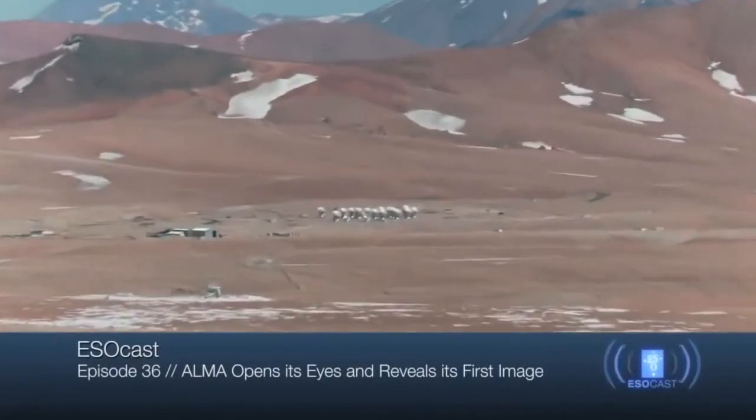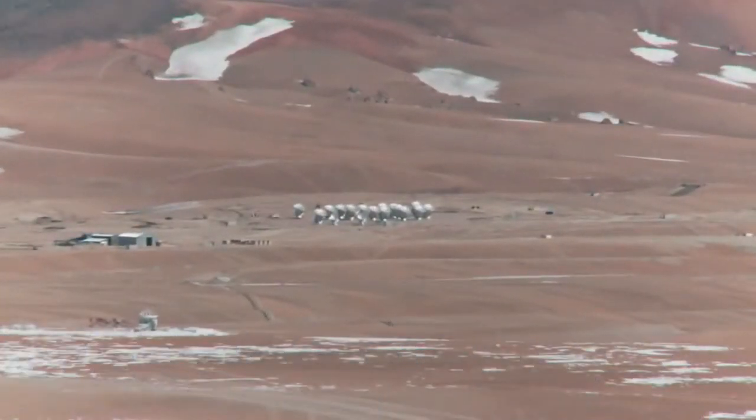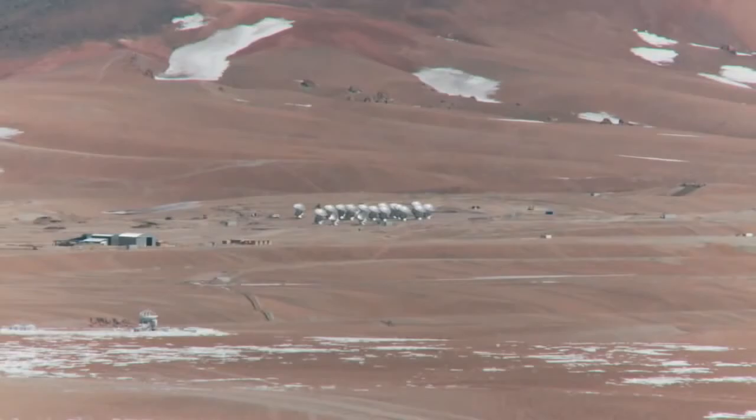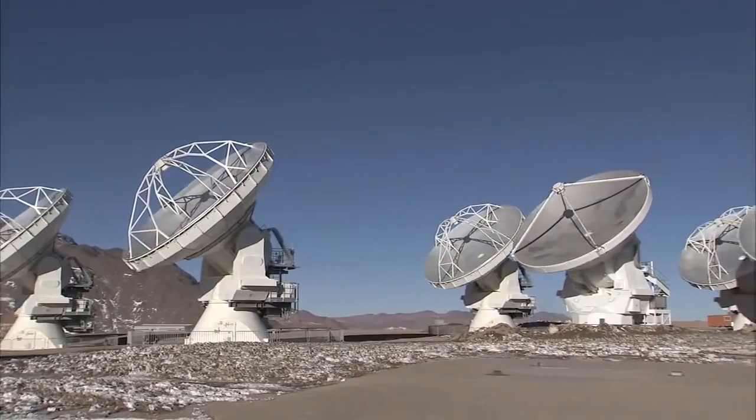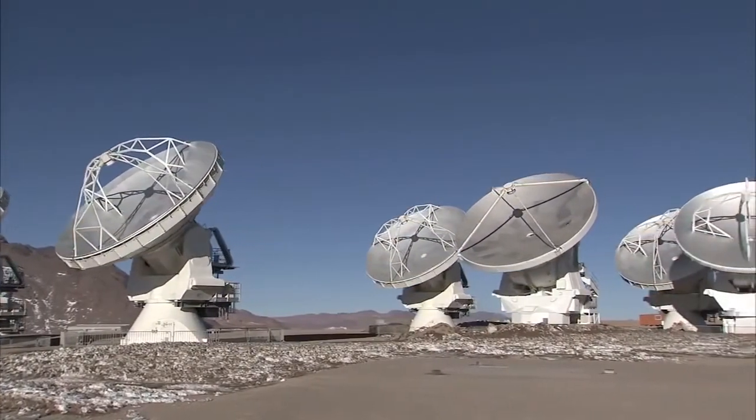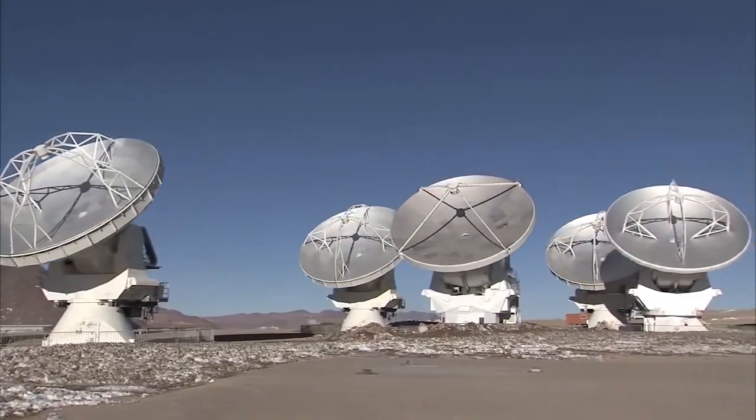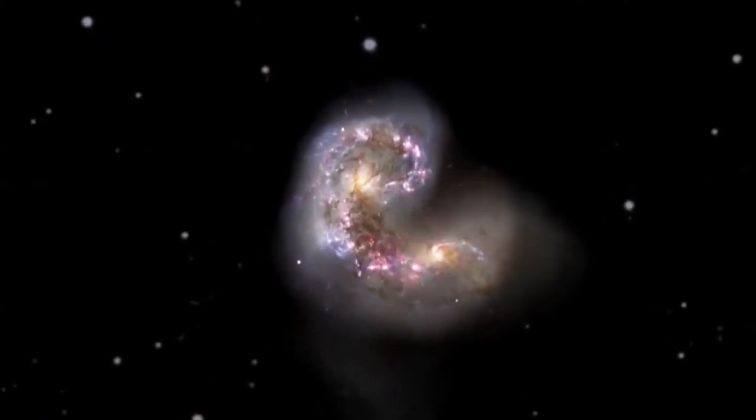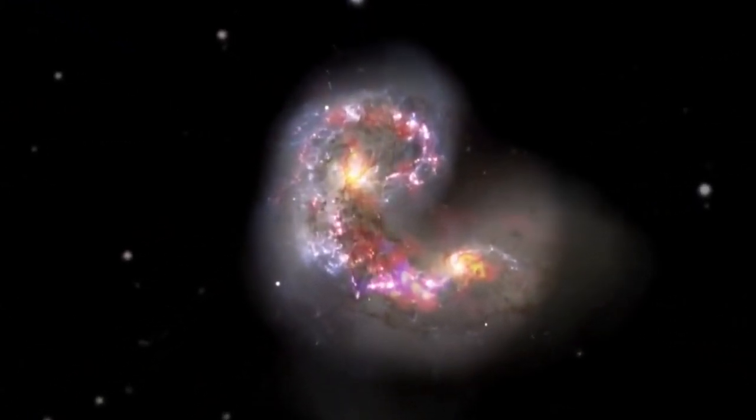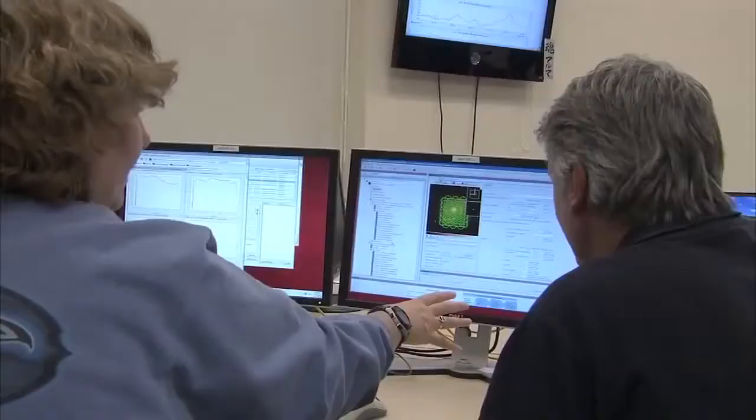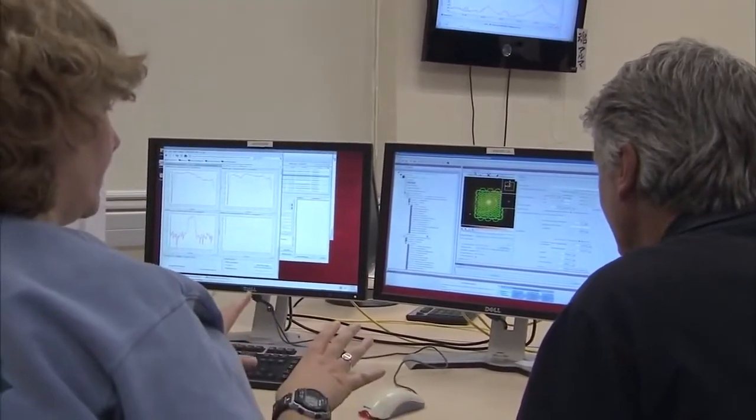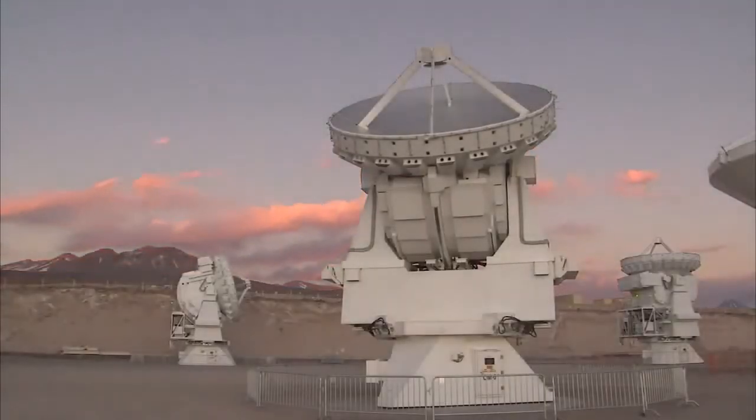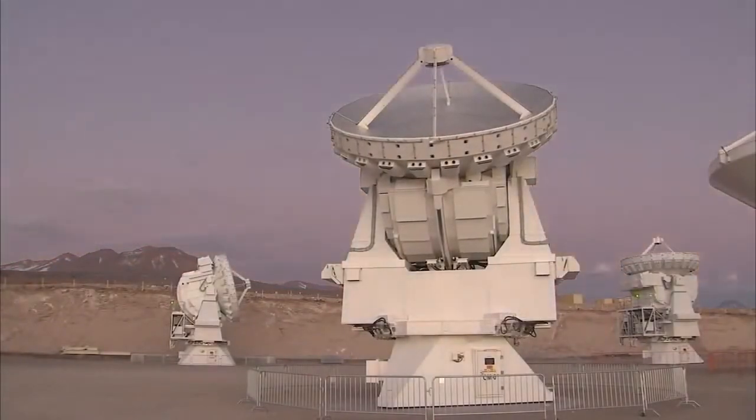Hello and welcome to the ESOcast. In this episode, we'll get the latest news from ALMA, the Atacama Large Millimeter Submillimeter Array, as it begins its first science observations. And we'll reveal the first public image from ALMA, a dramatic view of galaxies that are undergoing a cosmic collision. We'll find out how astronomers around the world have been eagerly waiting to get their hands on this revolutionary telescope and discover why this is only the beginning for the observatory.